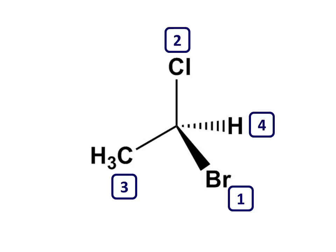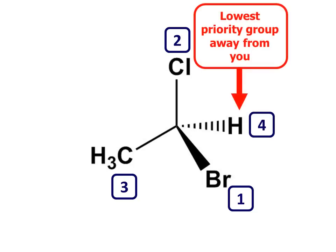Step two is to orient the molecule so the lowest priority group points away from you. In this case, it's already drawn that way. Remember that a dashed bond, like the one to the H here, means that bond and atom are behind the page, i.e. pointing away from us.